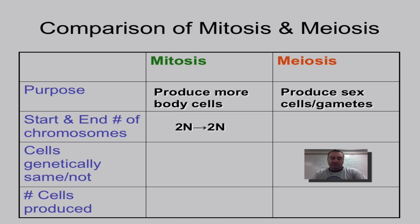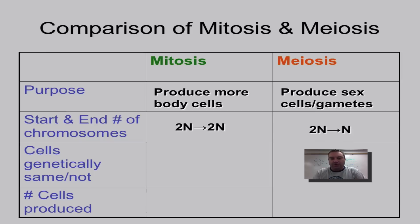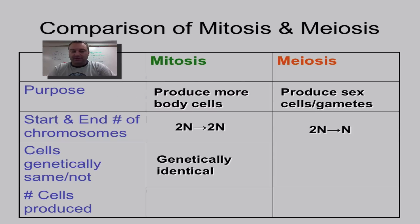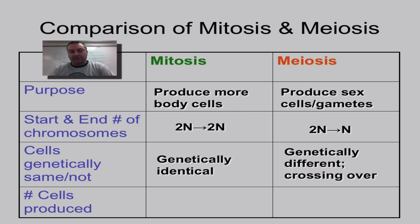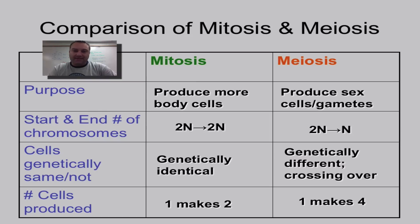In mitosis, you start diploid and you become diploid. In meiosis, you start diploid and you become haploid — you're cutting the number of chromosomes in half, which is the reduction division. In mitosis, the daughter cells are genetically identical to the mother cell, and in meiosis they are not, mainly because of crossing over. In mitosis, one mother cell produces two daughter cells, and in meiosis, one cell produces four — those are the four haploid gametes.